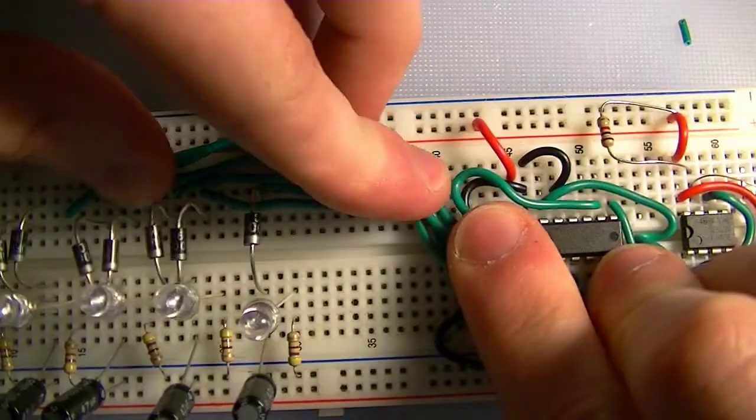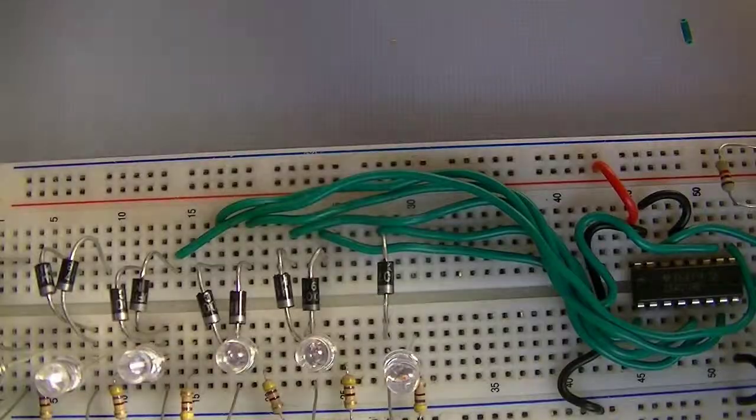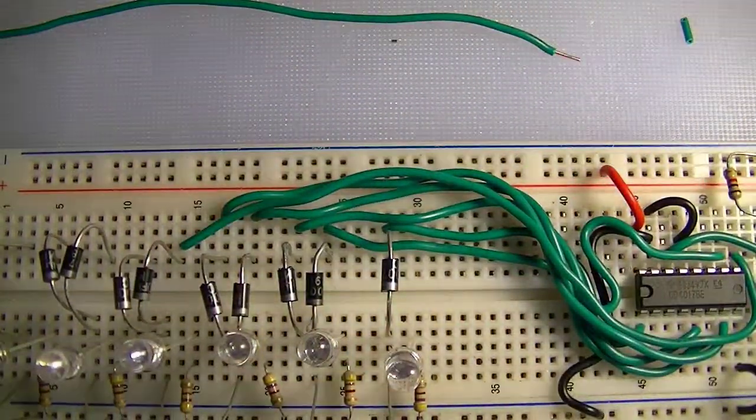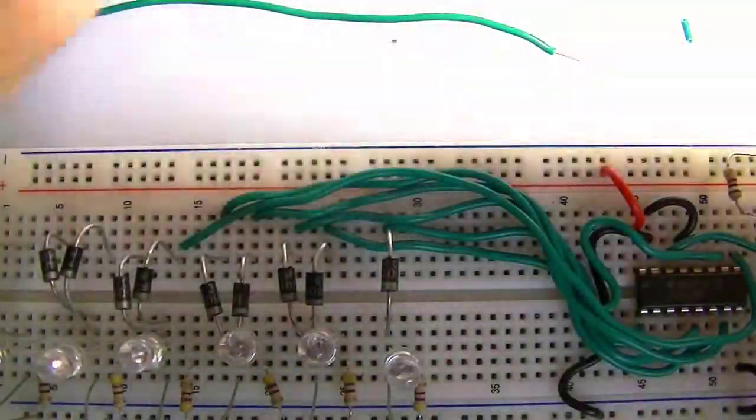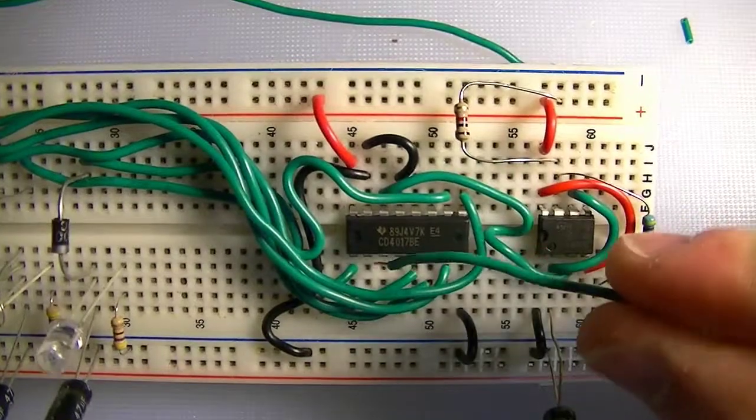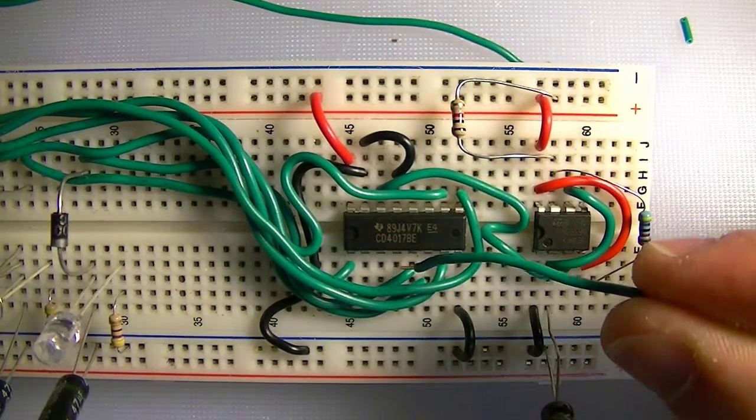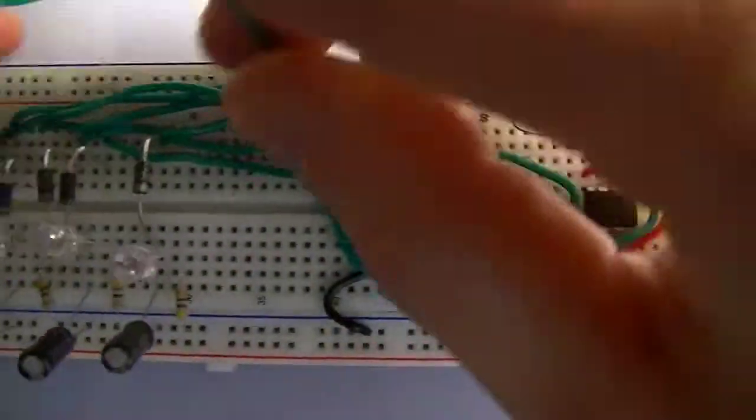Go around that side of the chip. So next one's 4—4 doesn't need that long a piece of wire though, so let's use this. 4 should be easy, that's 1, 2, 3, 4. Just route that over.